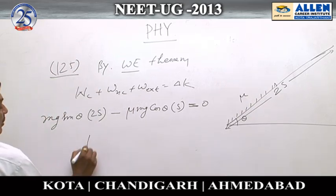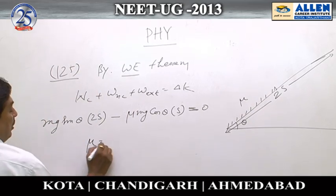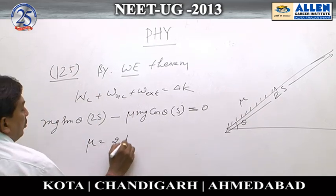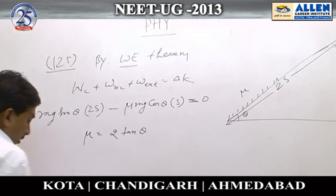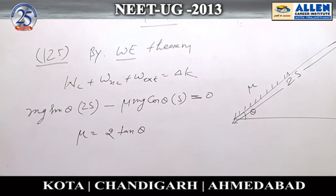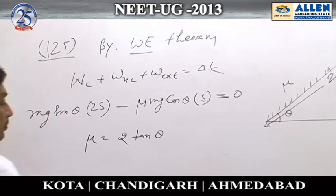Solving it, mu is equal to 2 tan theta. So the correct answer is option 4.